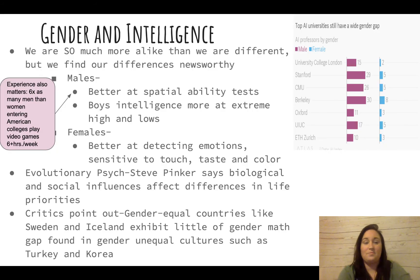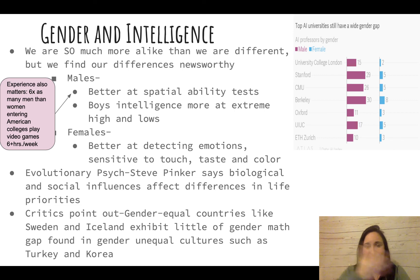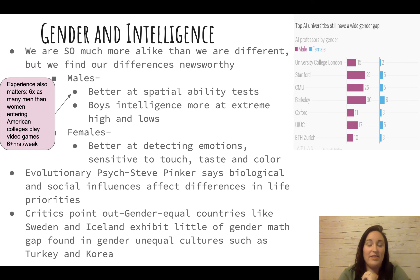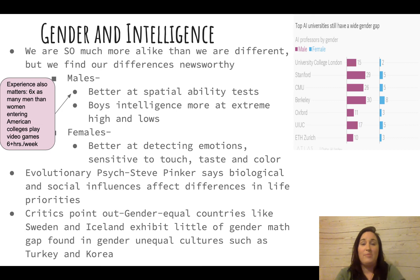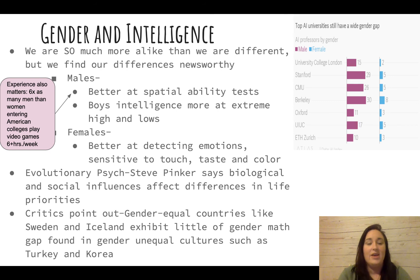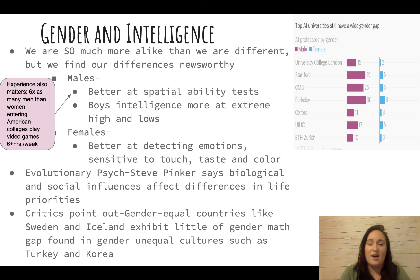On gender and intelligence: overall, we are far more alike than different. The idea of totally different intelligence based on gender is not well-supported. Evolutionary psychologists attribute some differences to biological and social reasons tied to hunter-gatherer roles, but critics point out that in gender-equal countries like Sweden and Iceland, there is essentially no gender gap in subjects like math, indicating a heavy cultural influence.